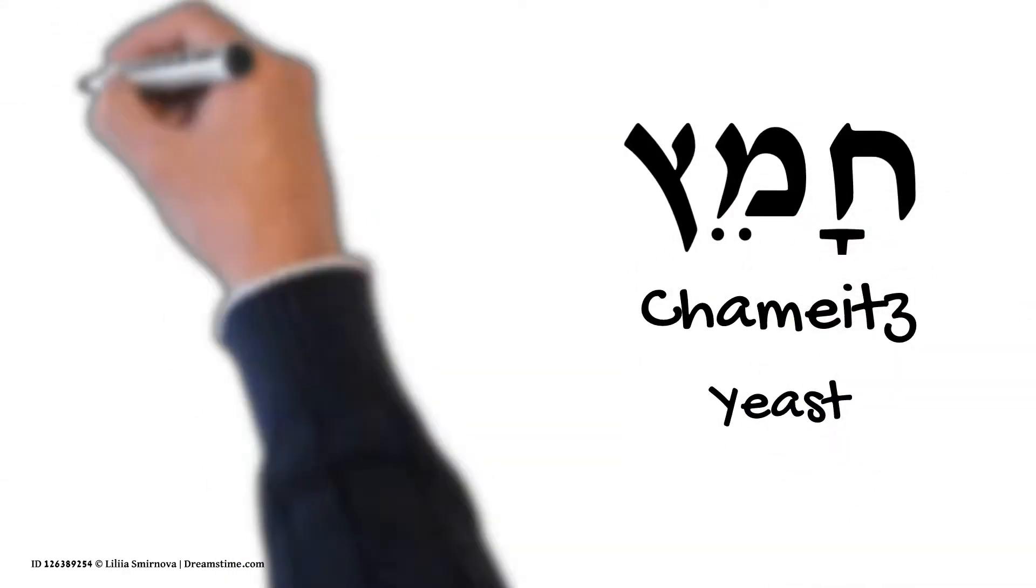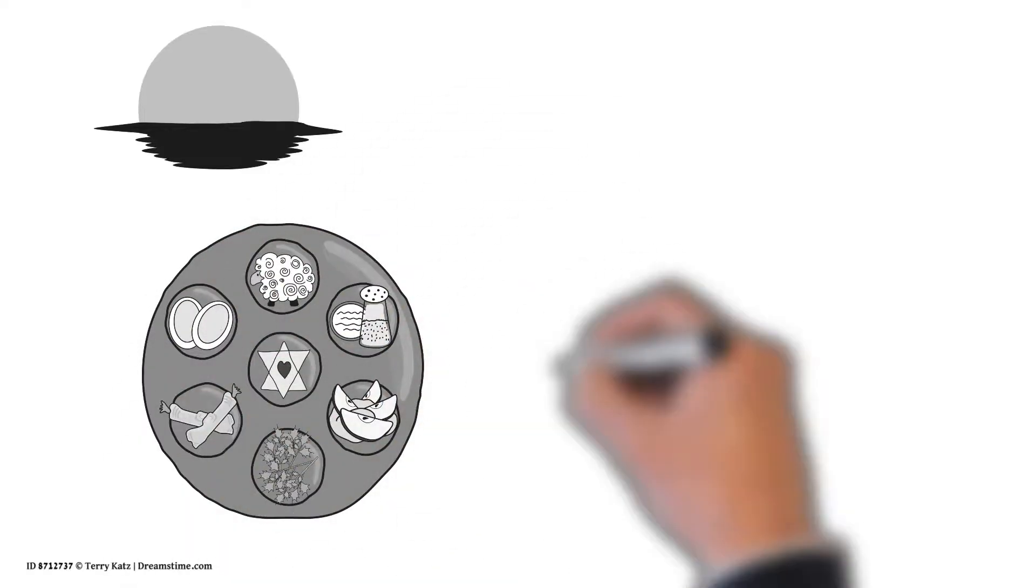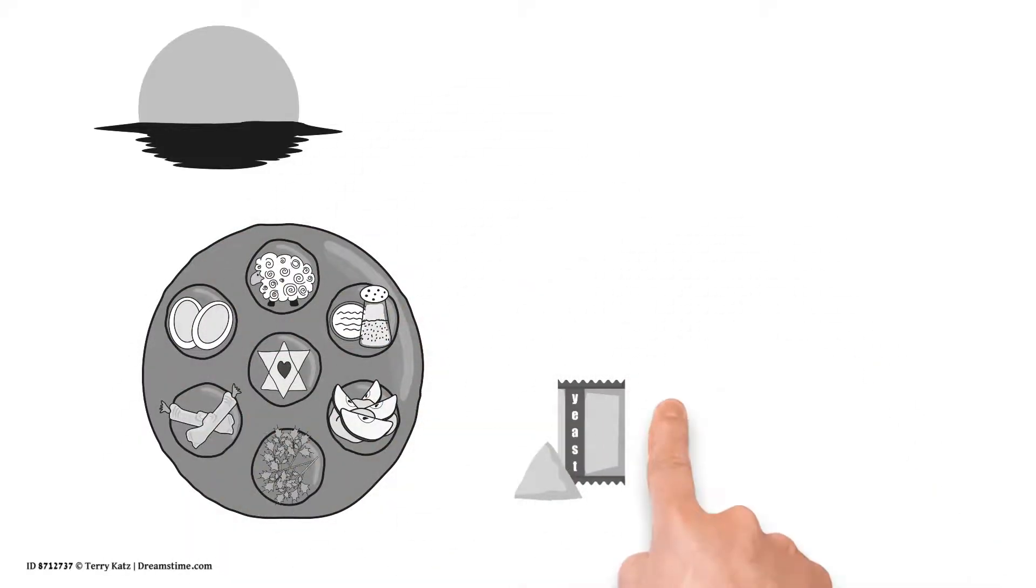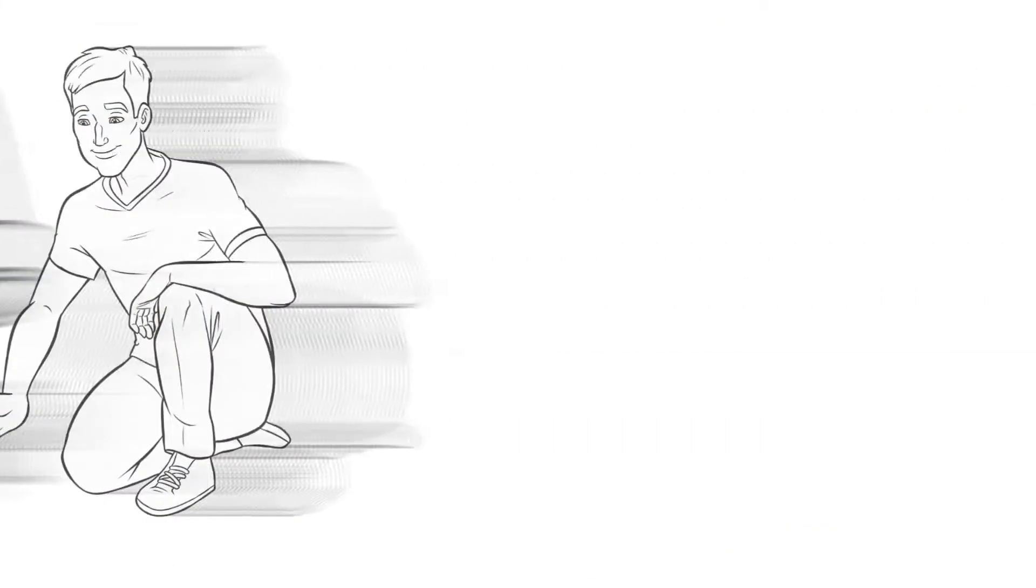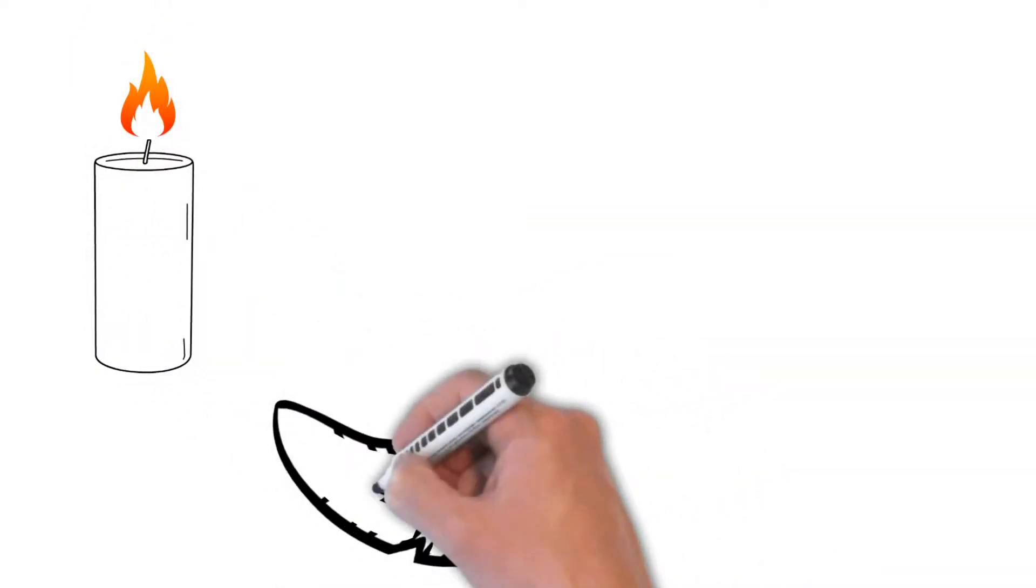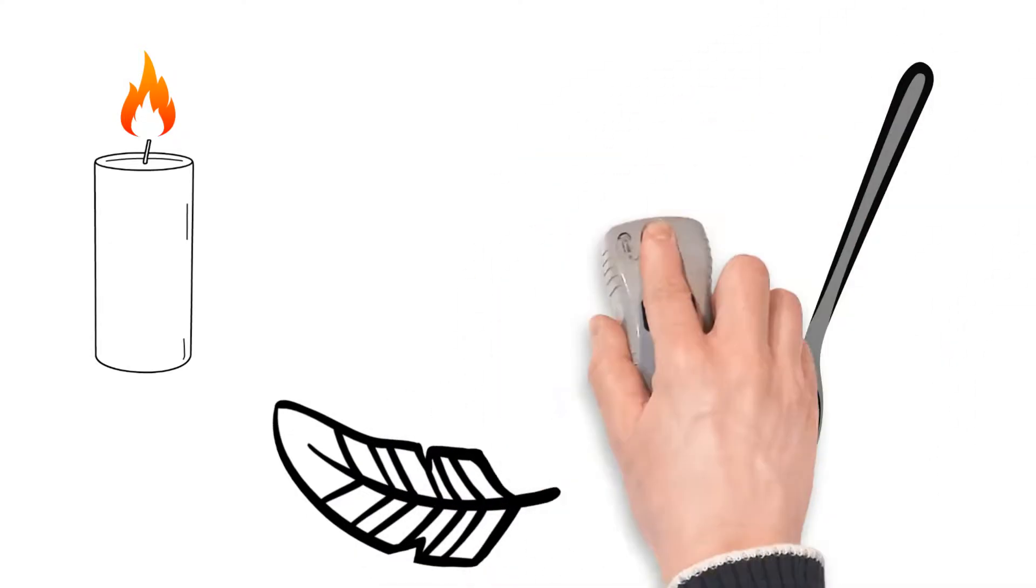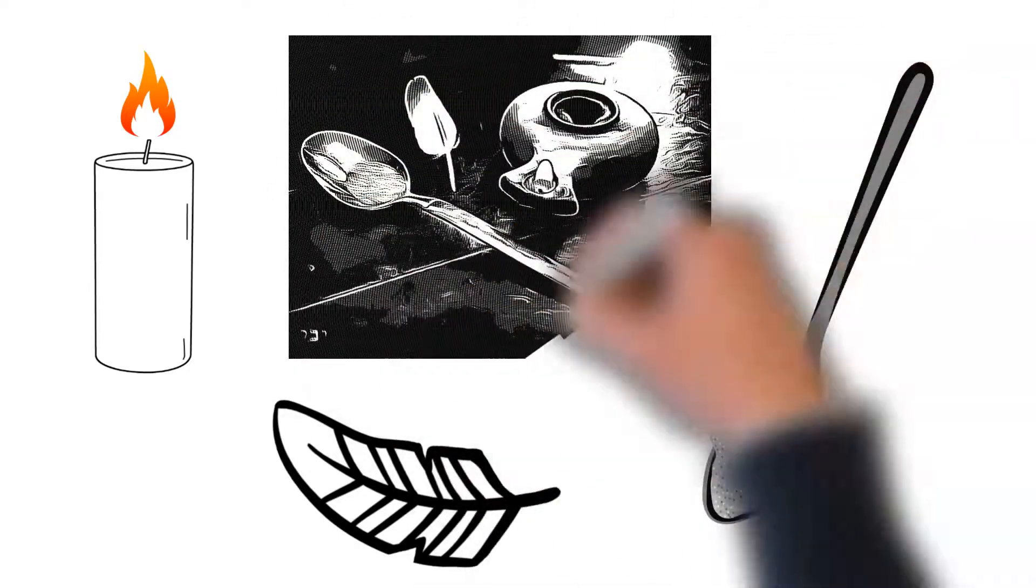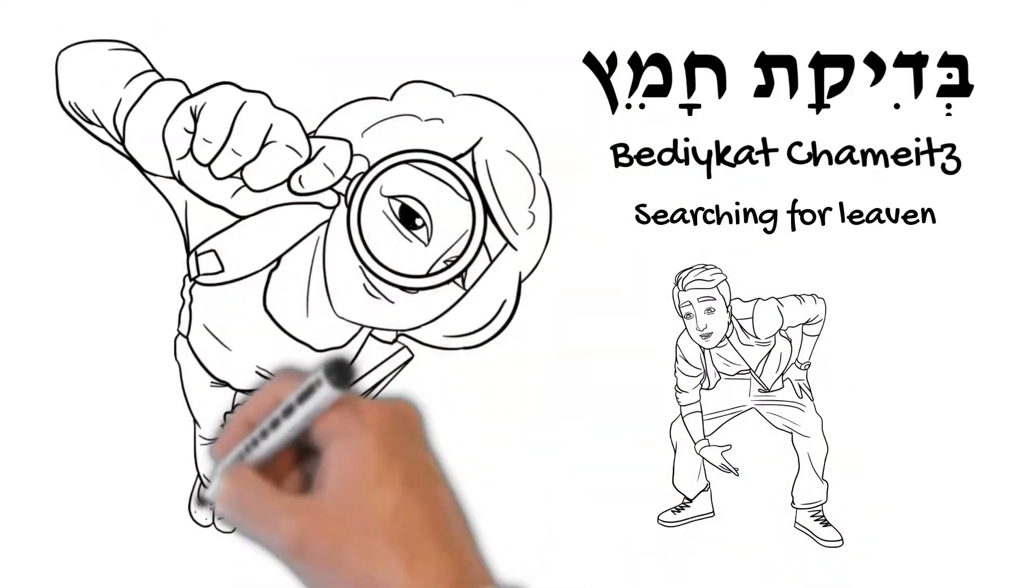Chamedz is the Hebrew word meaning yeast or leaven. On the evening prior to the first Pesach Seder meal, the head of the household makes the final preparation for Passover by leading the family throughout the home in a search for yeast. A candle is lit to reveal any hidden yeast and a feather is used to sweep up even the smallest pieces of yeast into a wide spoon. This practice is called Betikat Chamedz or Searching for Leaven.